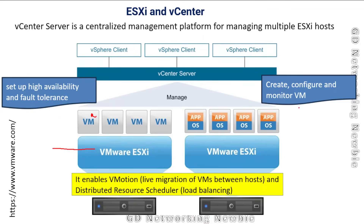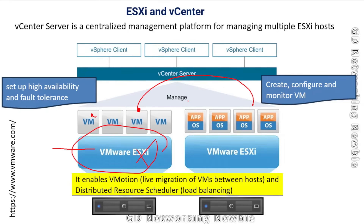vCenter server also allows us to enable vMotion, which is the live migration of virtual machines between hosts. If you want to move a virtual machine to another host due to some problem, you can do this even while the virtual machine is in a powered-on state. Another function is DRS - Distributed Resource Scheduler - which is used for load balancing so that every ESXi host has an equal number of virtual machines running on it.